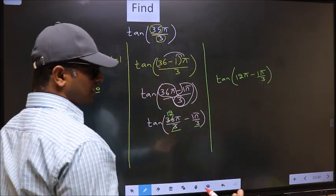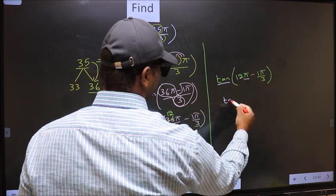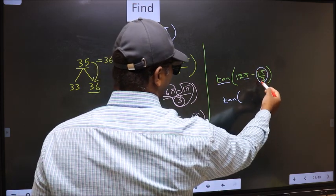Next, here we have π. So tan is not going to change. It will remain, and inside we get this angle.